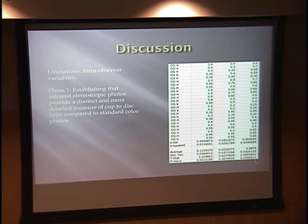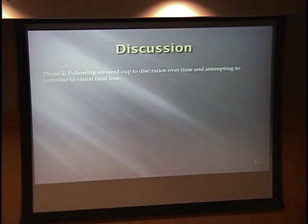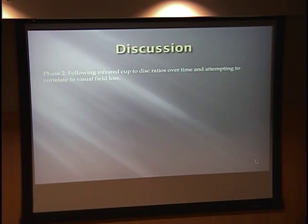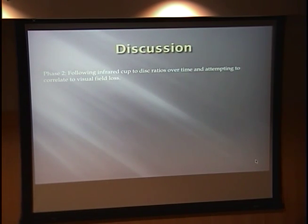Phase two is to correlate it to visual field loss. Last night I got a call from one of the residents at VCU — he was pretty excited. With only about 14 patients so far, two patients had come in that day whose cup to disc on color photo was read as exactly the same as their previous appointment. But on the IR image, directly underneath the vessel, they found two fairly impressive notches. It was a theoretical assumption due to optical sectioning, but it was just nice to see that confirmed.